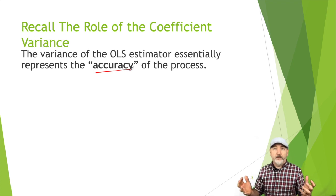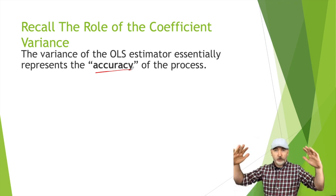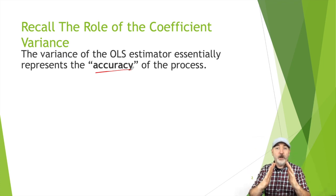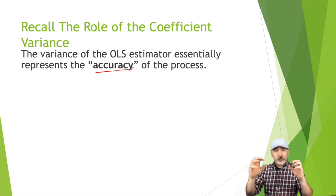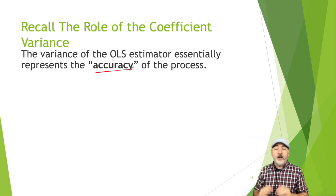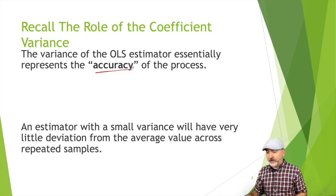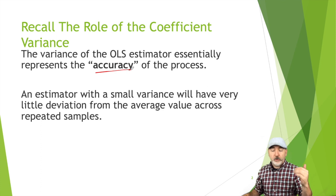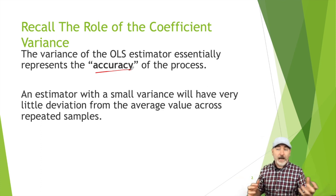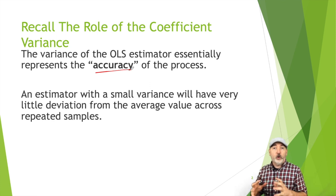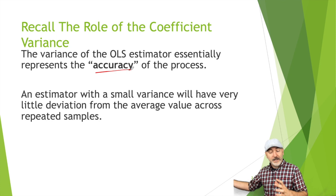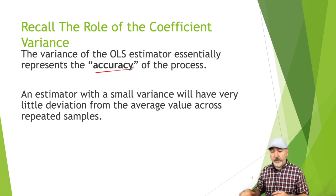We'd always much rather have an estimator coming from a distribution that is tightly packed about the true value, with a smaller probability of being well away from the value we're trying to estimate. This has a lot of practical implications in terms of our ability to conduct hypothesis testing, which is the next step we'll take after this.